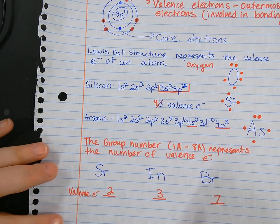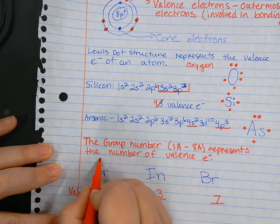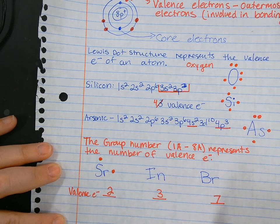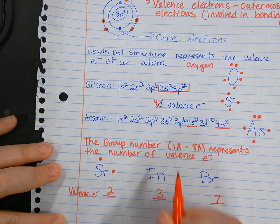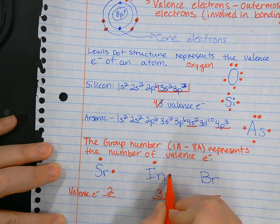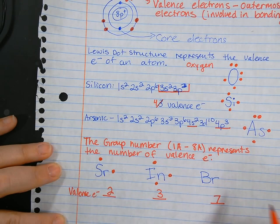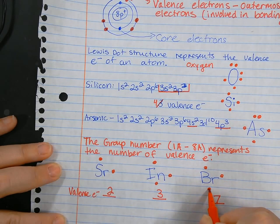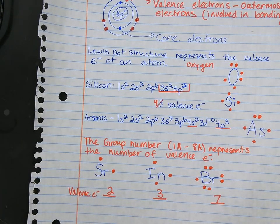From there we can draw their dot structures. Again, remembering we're going to start at the top and separate the electrons, and if we have more than four, then we start pairing them up. Indium has three, so we get the three dots. Bromine has seven, so we do one, two, three, four, and then start pairing them: five, six, and seven.